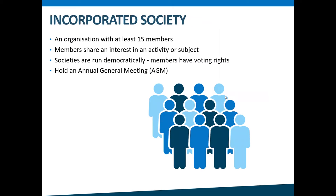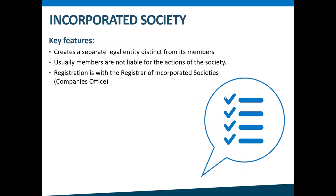The next type of entity we'll talk about is an incorporated society, which is an organization with members. Members share an interest in a particular activity or subject — for example, a local tramping club or a group of stamp collectors. Many clubs are also incorporated societies. Societies are run democratically, which means that members have voting rights on decisions and the society is required to have an annual general meeting. The key features of an incorporated society are that they create a separate legal entity distinct from its governing members, meaning that even if the governing members change, the society will continue.